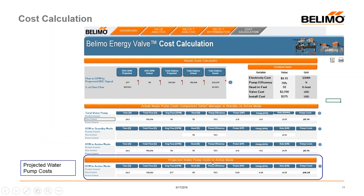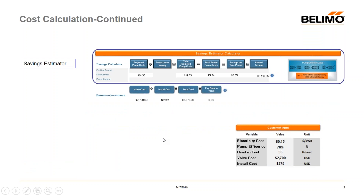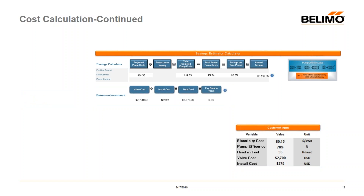At the bottom is the projected pump water costs section, which takes the information from above and calculates what the value would have been without delta T manager control. The savings calculator compares pumping costs in standby versus active mode with the total projected pumping costs, subtracts out what the actual cost was, and gives you a savings per time period and an annual savings. Below that is the return on investment, which takes the cost of the valve and installation divided by the annual savings to give you the payback in years — using basic pump affinity laws, nothing more.